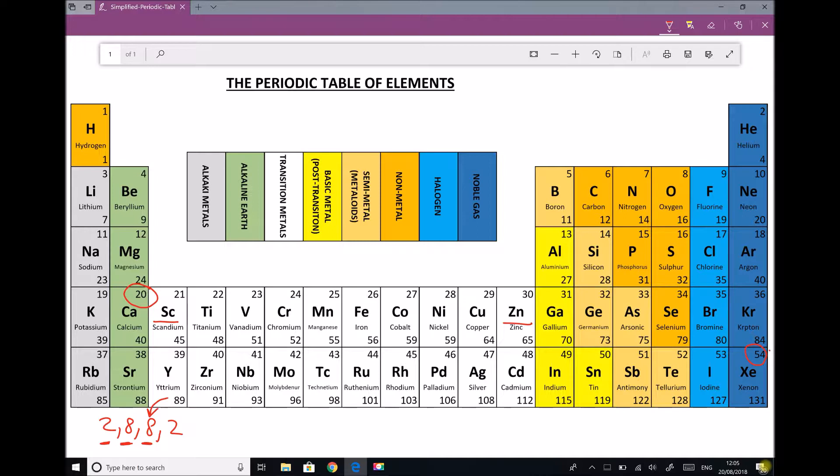So if we look at scandium, what we actually end up with in terms of an electronic configuration is 2, 8, we backfill the third shell, 9, 2.